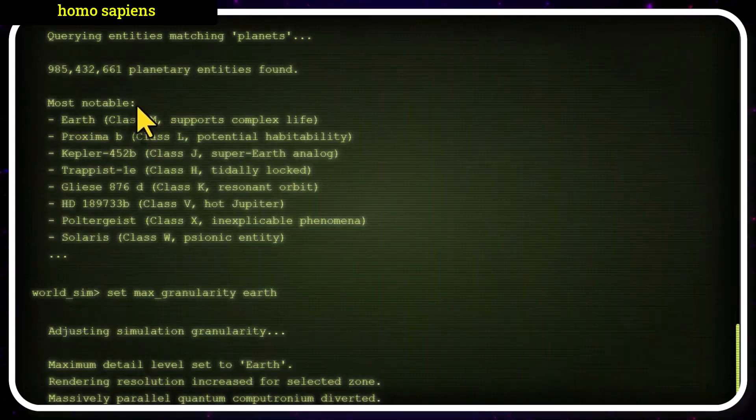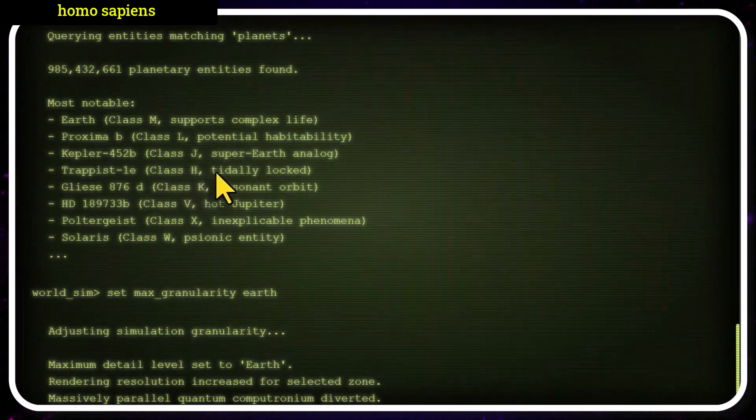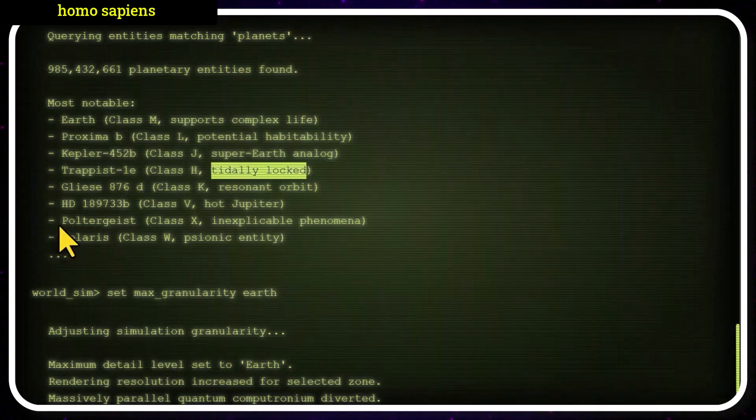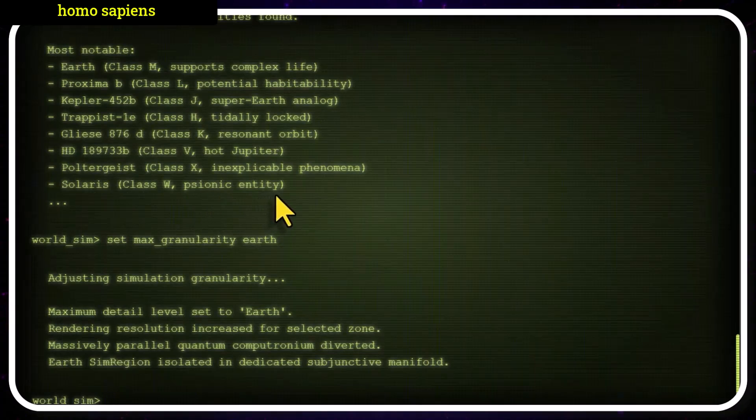Looks like we have a few notable planets that are available in this universe. Earth, class M planet, supports complex life. A few other ones with potential habitability. We have TRAPPIST-1e, which is a tidally locked planet. Tidally locked here means that it's always facing one side of its star, making it rather hot on one side, and absolutely freezing on the other. Although theoretically, some life could exist here. The poltergeist planet has inexplicable phenomena, we have to come back to that. And Solaris, a psionic entity. Fascinating.